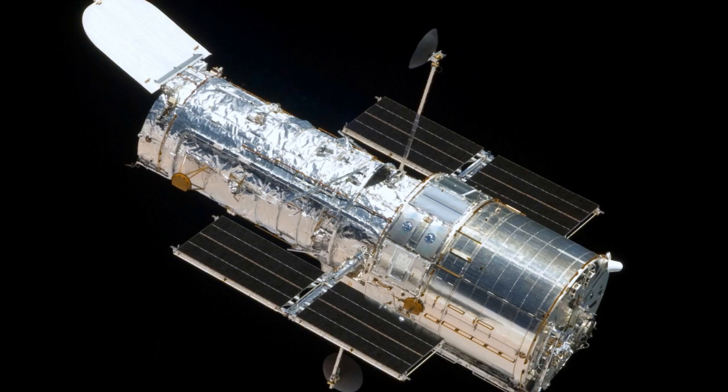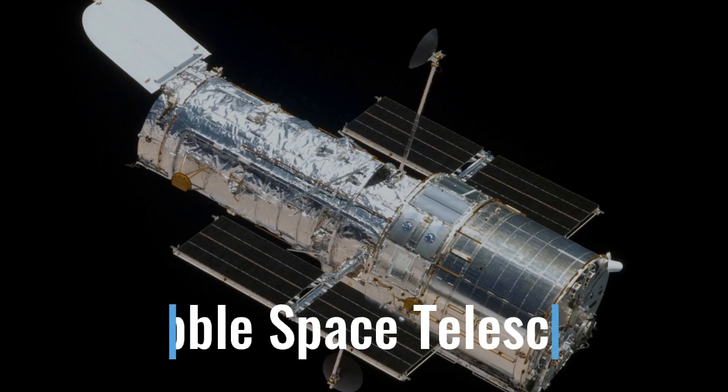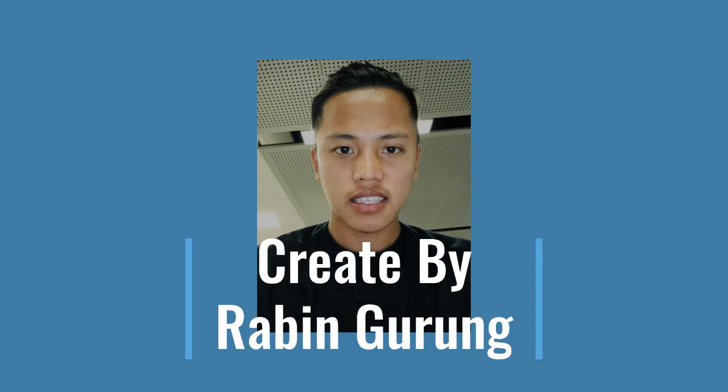Space telescopes can detect wavelengths that Earth's atmosphere blocks. This is the Hubble Space Telescope. Even though it was not the first space telescope, it is one of the largest and most versatile, and is well known both as a vital research tool and as a public relations boon for astronomy. Thank you for your time in listening to my radio telescope video — I hope this was not boring at all. Ciao!